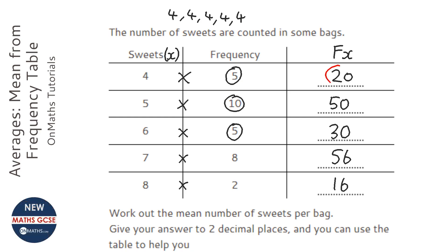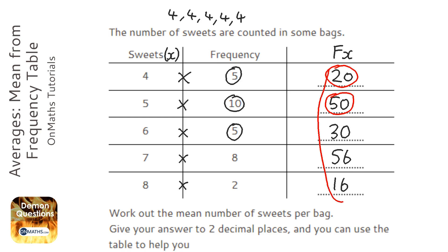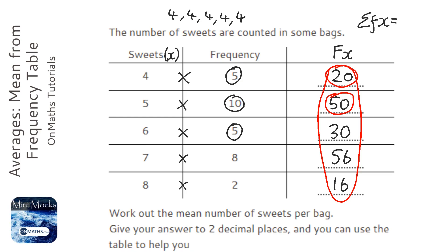Now this twenty here is how many fours we have — like if we added up all the fours. This fifty is if we added up all the fives. So what we need to do is add up all of these, which I call the sum of fx. So I'm going to get my calculator out: twenty plus fifty plus thirty plus fifty-six plus sixteen, which is one hundred and seventy-two.